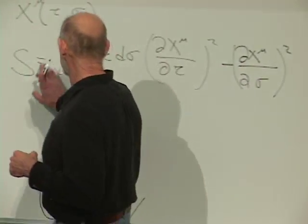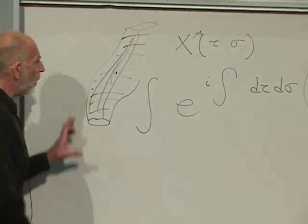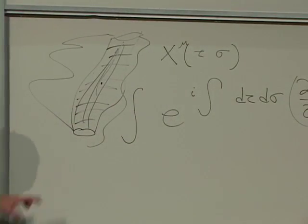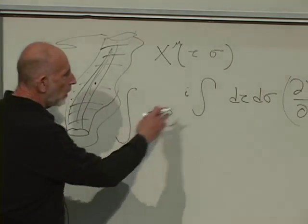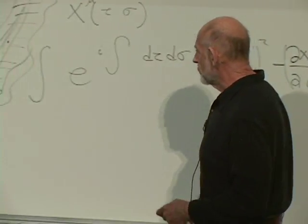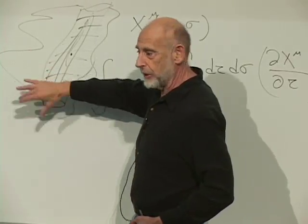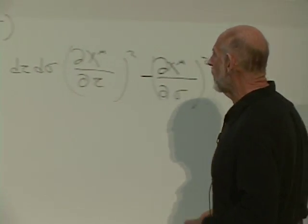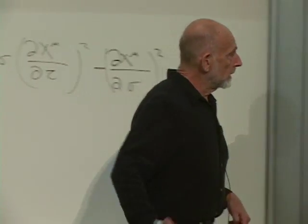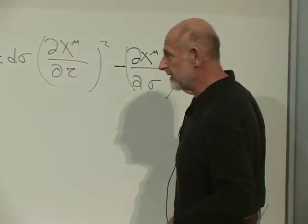What do you do with this action? You exponentiate it — e to the i — and then integrate over all possible surfaces. There's also a classical version where you just minimize the action to find the classical motion. But we're interested in quantum mechanics: this is the amplitude for the string to go from an initial configuration to a final configuration. This can essentially be defined as the definition of string theory.